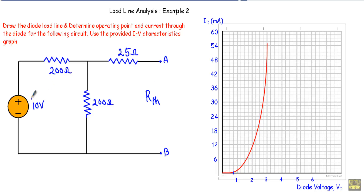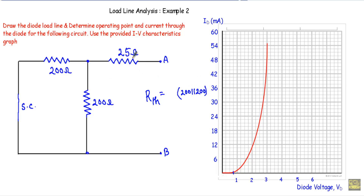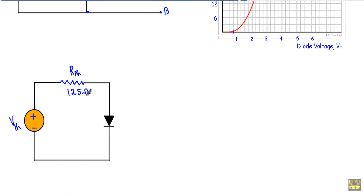While calculating RTH, I will replace the voltage source with a short circuit. With respect to terminals A and B, I can see that the 200 Ω and 200 Ω resistances are connected in parallel. Therefore, RTH equals 25 plus 200 in parallel with 200. When two equal resistances are in parallel, their equivalent is half that value, so 200 ∥ 200 = 100 Ω. Therefore RTH = 25 + 100 = 125 Ω.